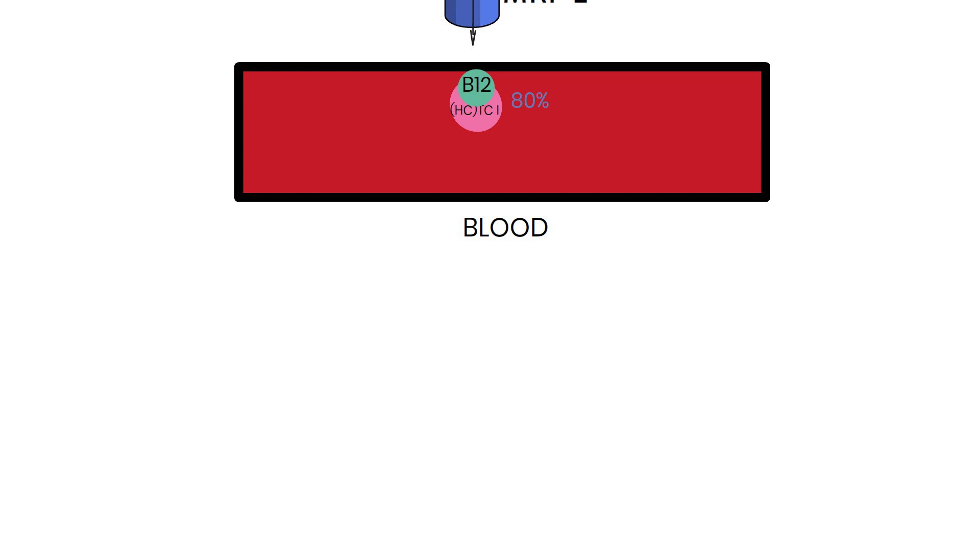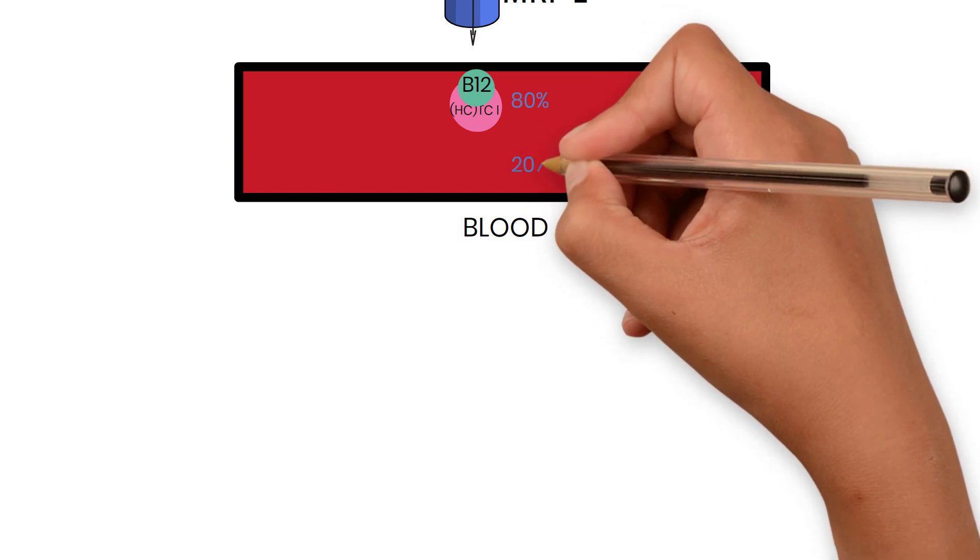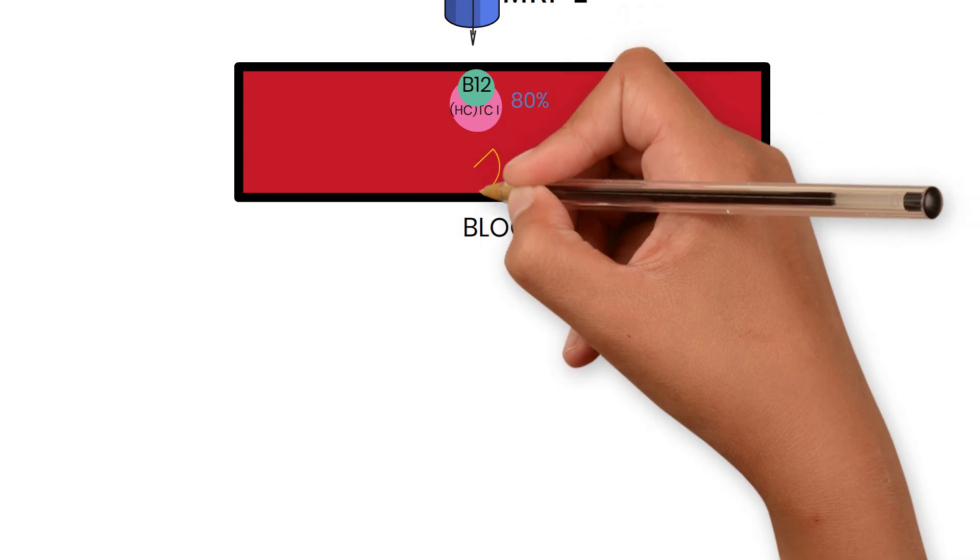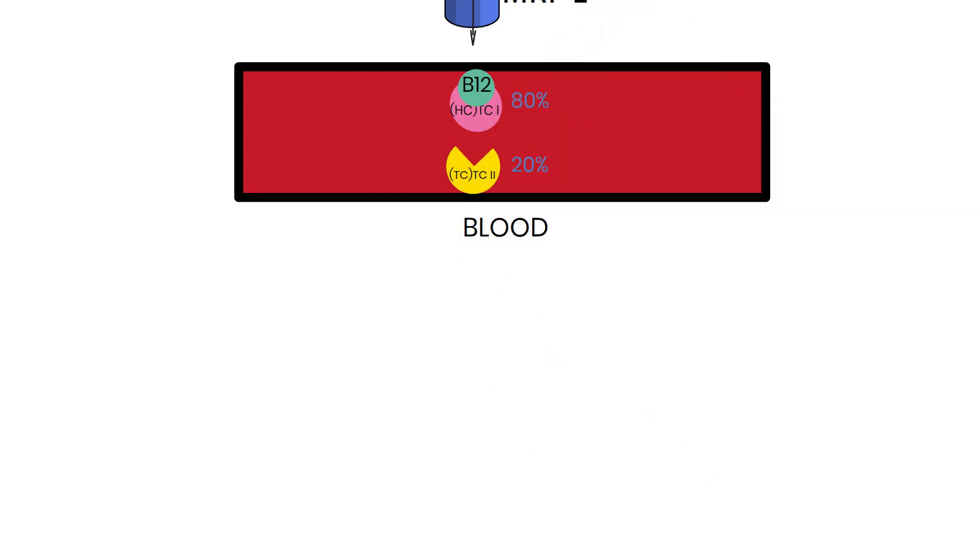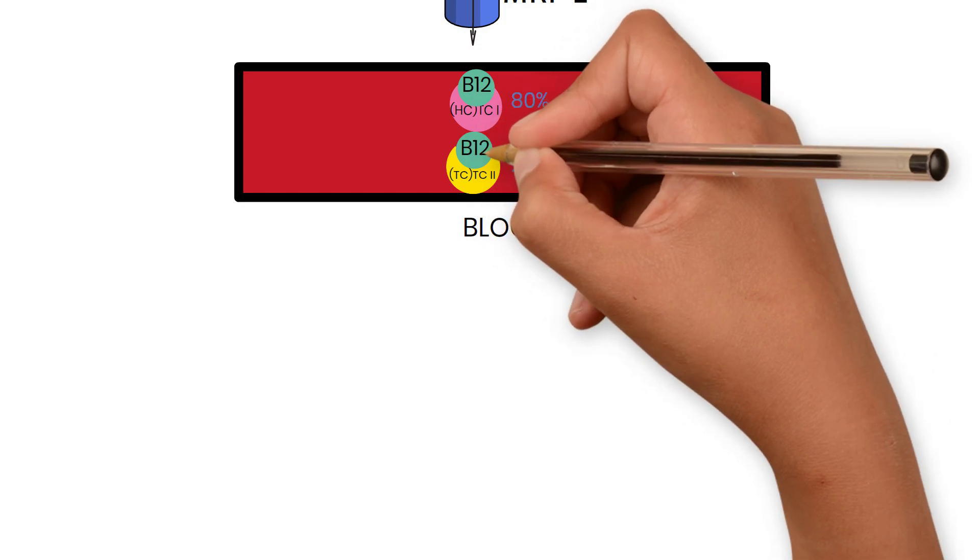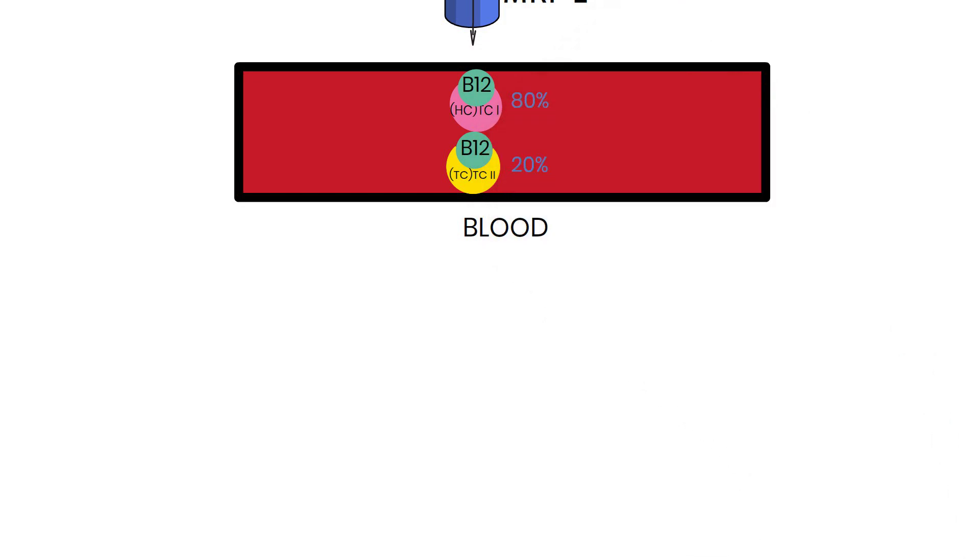It may play a role in transport of cobalamin analogs to the liver. 20% of B12 binds to transcobalamin, also known as transcobalamin 2. This transcobalamin transports B12 to bone marrow and other cells.